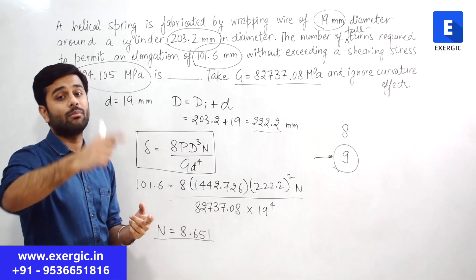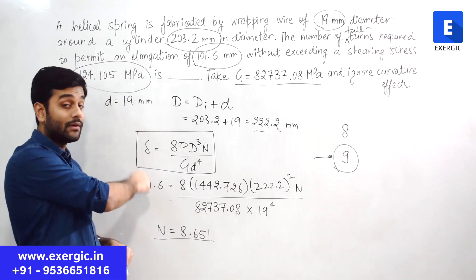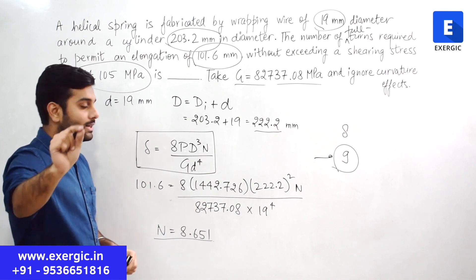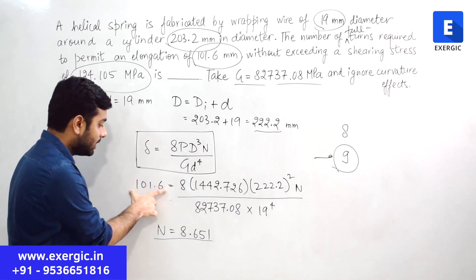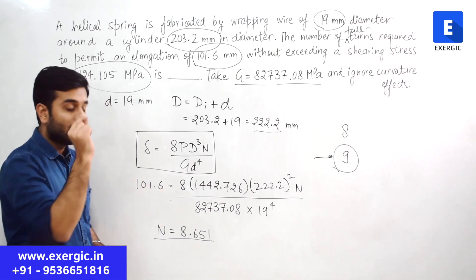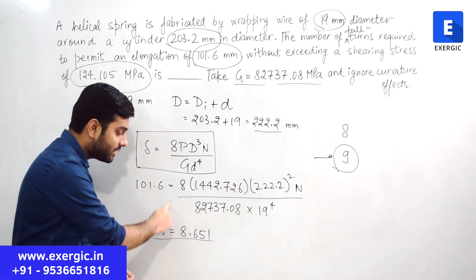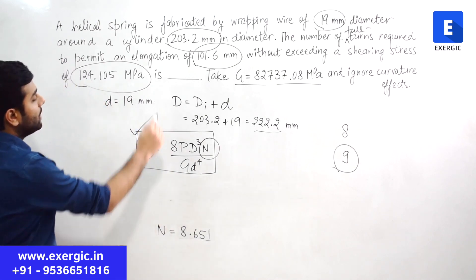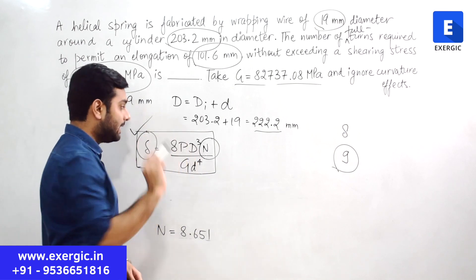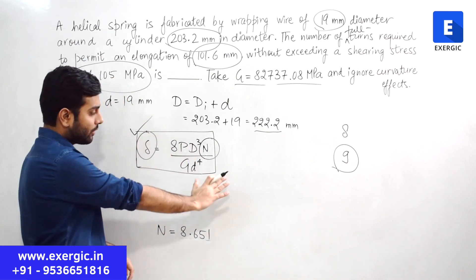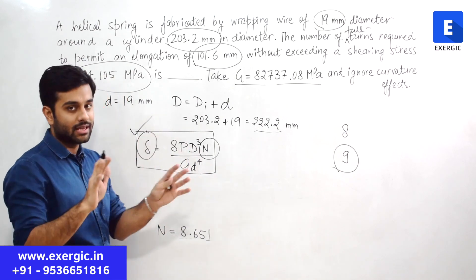All other factors we are not changing. We are only changing the number of turns. Question after solving, it clearly told you that if you want the value of del restricted to this value, number of turns should be 8.651. Now focus only on this expression, only on del and N.